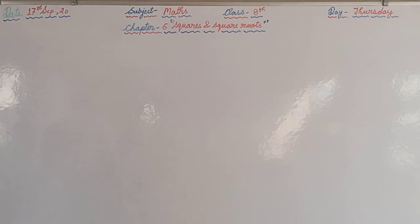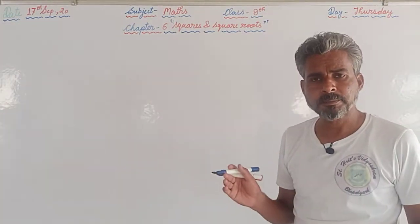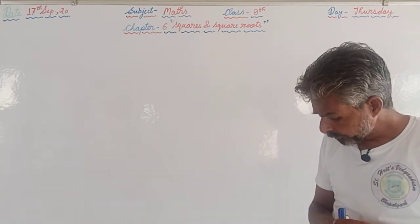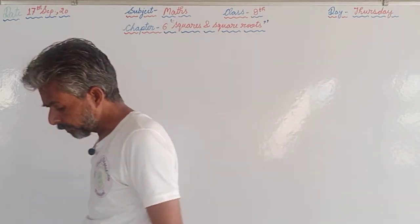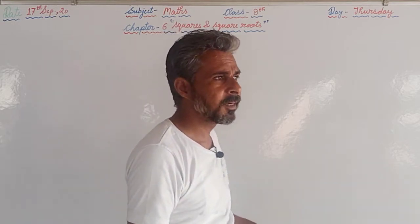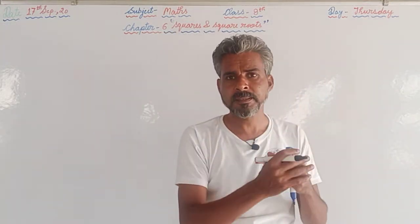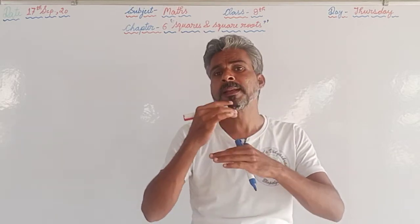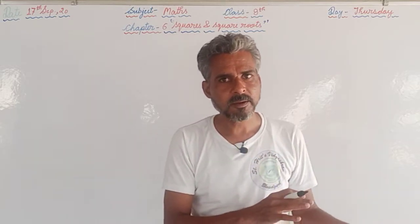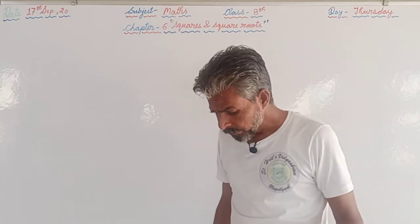We have completed Chapter 6, which is Squares and Square Roots. In this chapter, we find squares as well as square roots. Square means multiplying the number by itself — for example, the square of 9 is 9×9 = 81, and 9 is the square root of 81.